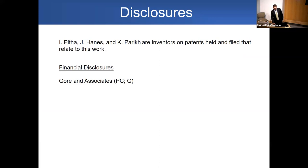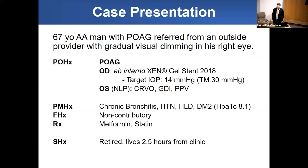I'd like to start with a case that illustrates the need for glaucoma surgery improvements. A 67-year-old African American man with advanced primary open angle glaucoma was referred with gradual visual dimming in his right eye. He had a history of CRVO in his left eye with no light perception, and several years prior had an ab interno Xen placed that worked for a while, targeting about 14 mmHg. His maximum pressure over the course of his glaucoma was about 30 mmHg. He lived about three hours from clinic, making regular follow-up difficult.